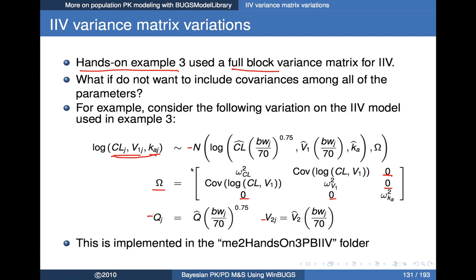Another way to look at this is that KA can be described as just a univariate normal distribution, while clearance and V1 are described as a bivariate normal distribution where we still estimate a possibly non-zero covariance. I've posted five different model examples on the course website; in particular one named ME hands-on 3 PBI IV, meaning partial block inter-individual variance. Let's look at how to implement this kind of model.